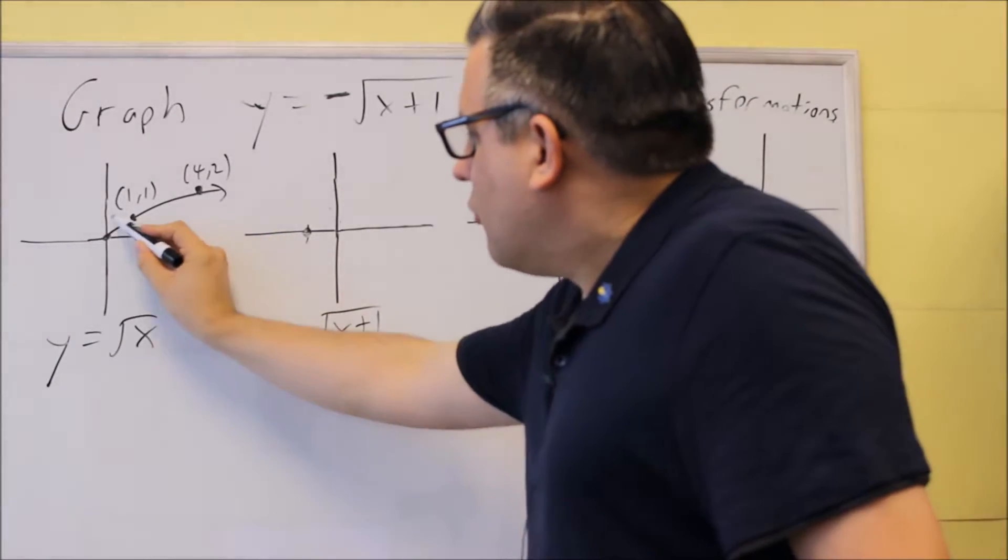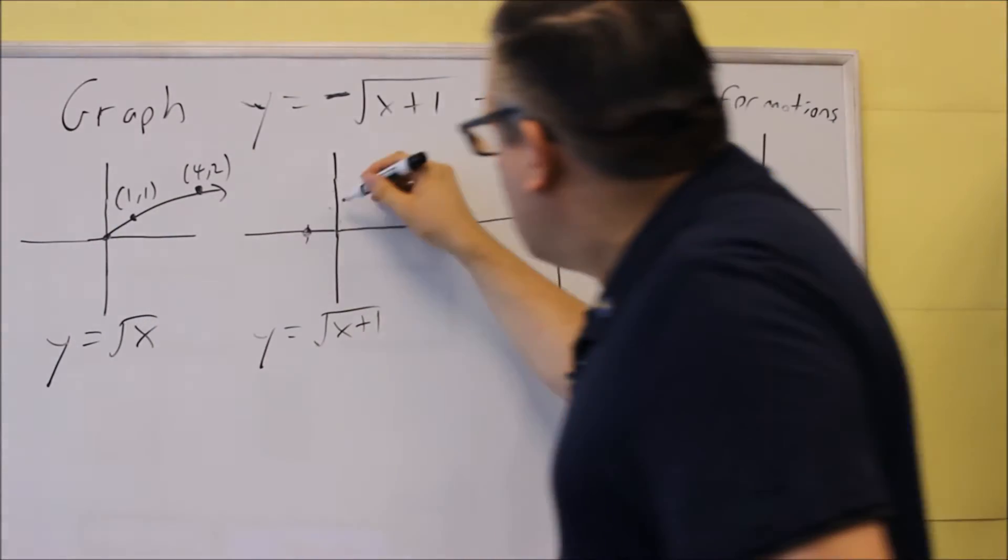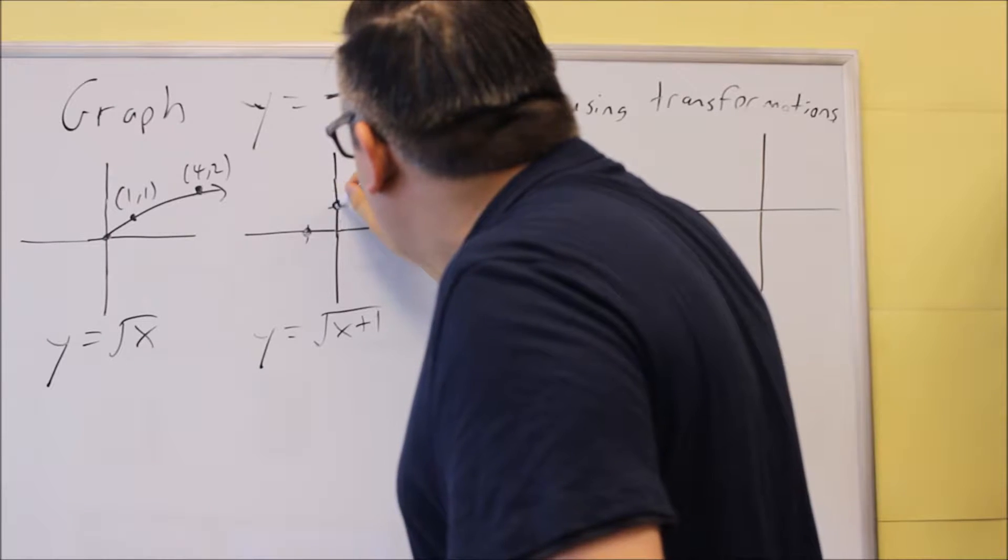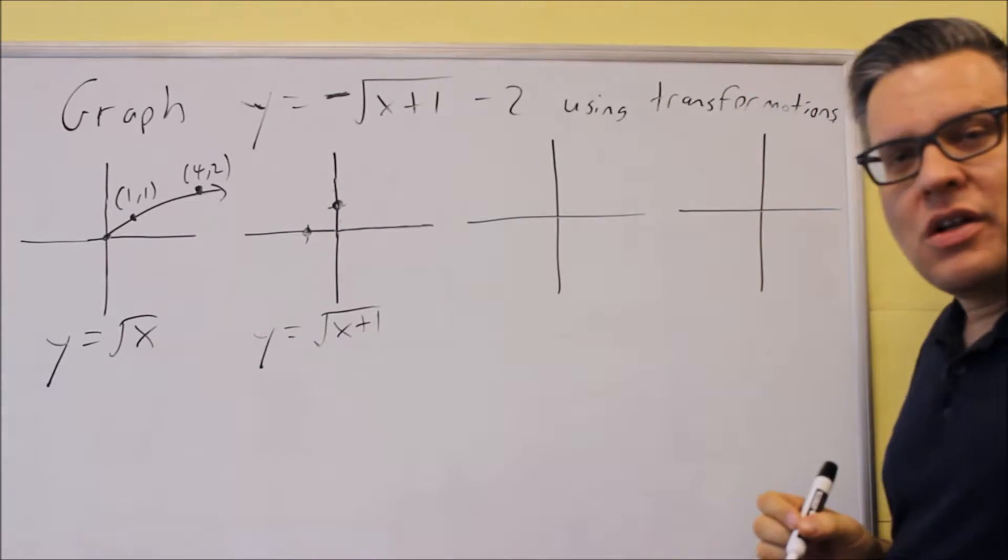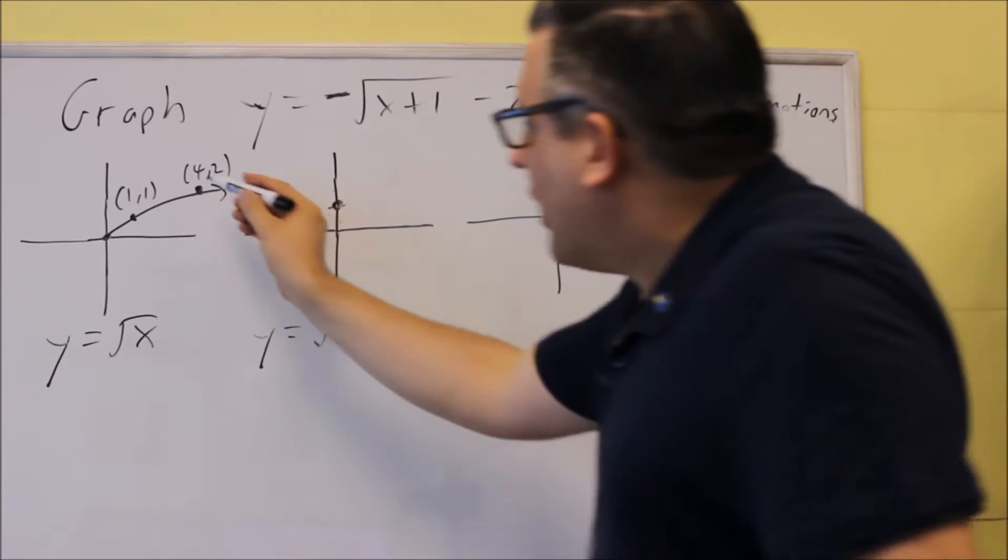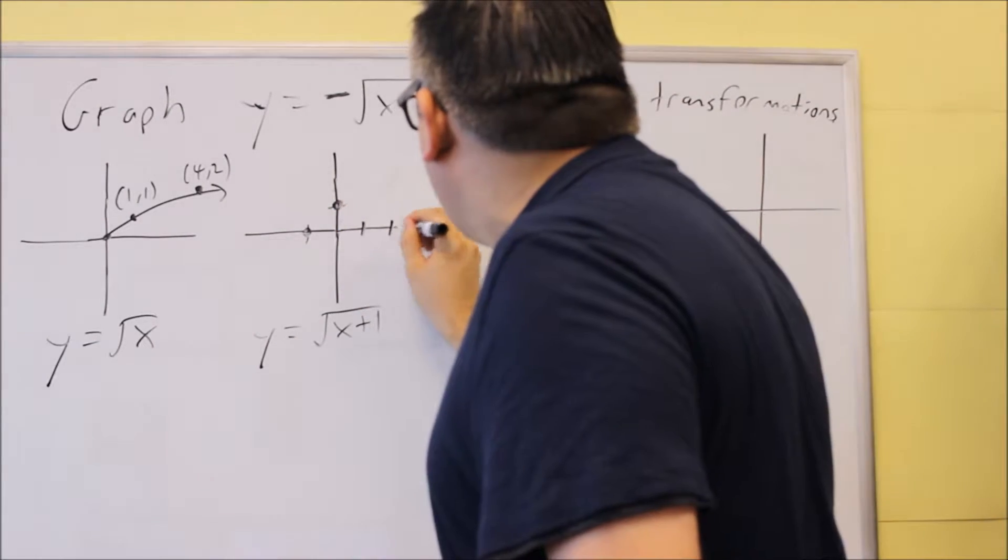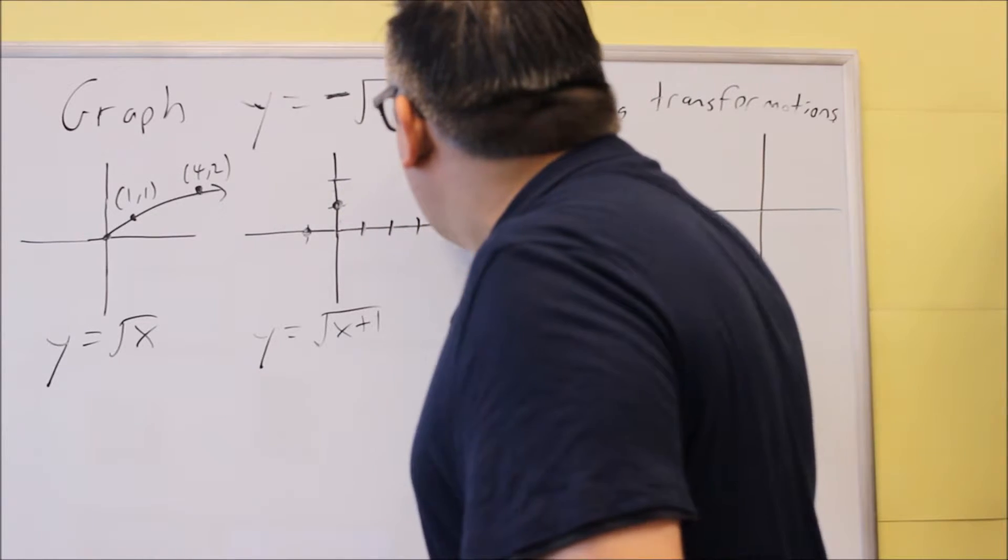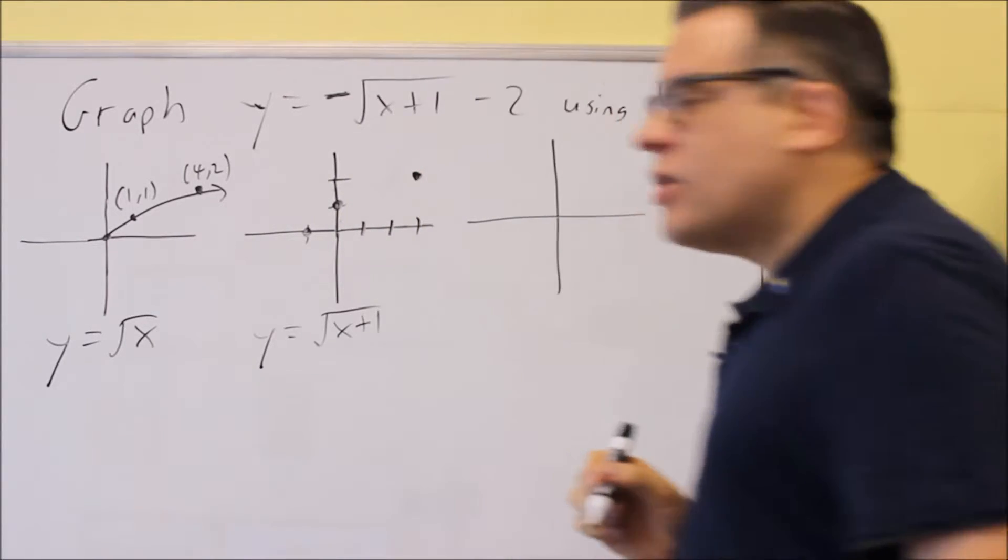This point also moves 1 over to the left. So instead of at 1, 1, it's now going to go through 0, 1. This last point also moves 1 to the left, which means that that's going to now go through, instead of 4, 2, it's going to go through 3, 2.